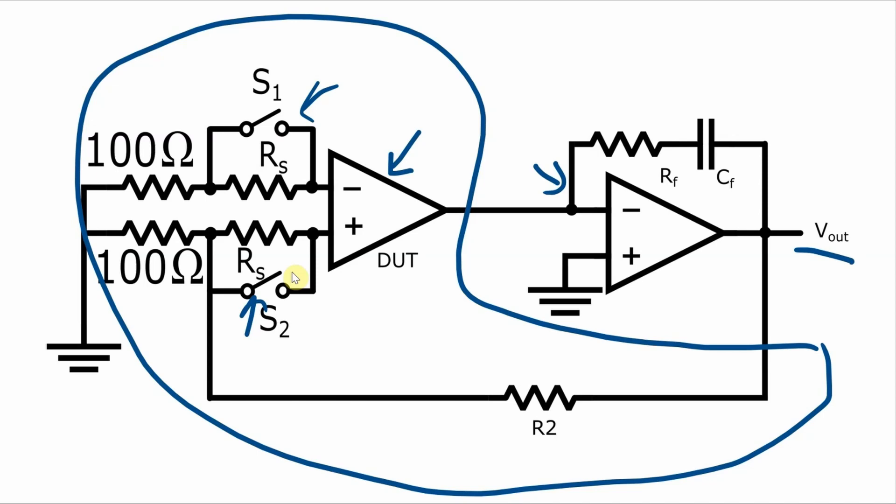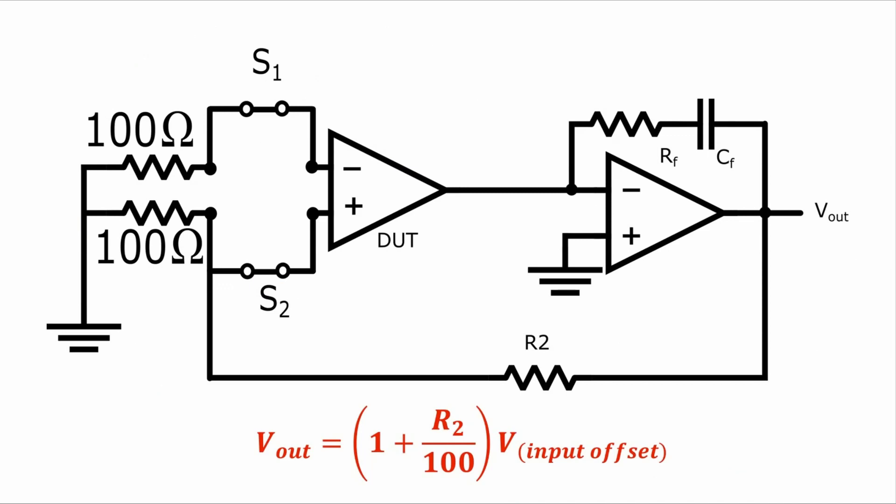To determine the input bias current, you must first determine the input offset voltage of the device under test, and you can do that with this circuit by closing both switches S1 and S2 to get a circuit that looks like this. Closing these switches will bypass the two RS resistors, and the output voltage will now be proportional to the input offset voltage of the device under test. And you can see my video on input offset voltage for more details on how this circuit works.